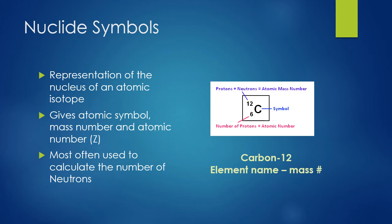Isotopes are represented in two different ways. The first way uses the element name followed by a dash and the mass number — for example, carbon-12, where 12 is the mass number. The second way uses a nuclide symbol: we write the element symbol from the periodic table, with the mass number in the upper left corner and the atomic number in the lower left corner. For carbon-12, we'd write C with 12 in the upper left and 6 in the lower left. The atomic number is sometimes omitted since it can be found on the periodic table.